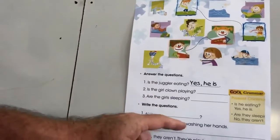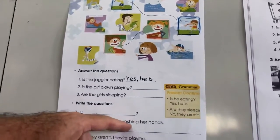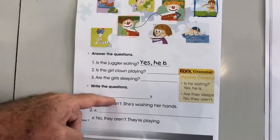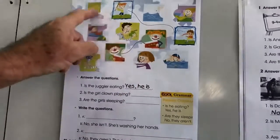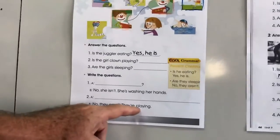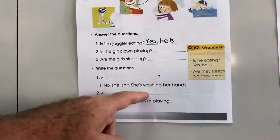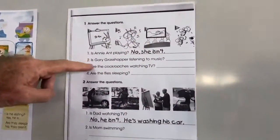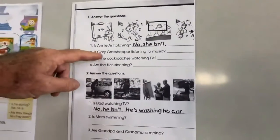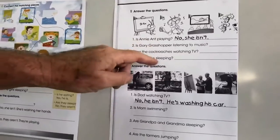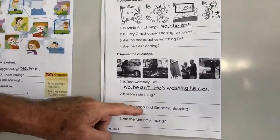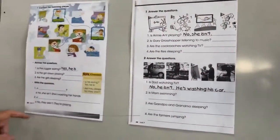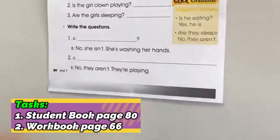And then we've got: are the girls sleeping? This one here — she's washing her hands. So what's the question? And here, look — no, they aren't. They're playing. So you need to put in the question just there. And then workbook 66. There we've got the little pictures. The answer is going to be yes or no, and the answer will include the subject: she, he, they, they, she, they, and they — and then yes or no. So that's page 80 in your student book and 66 in the workbook.